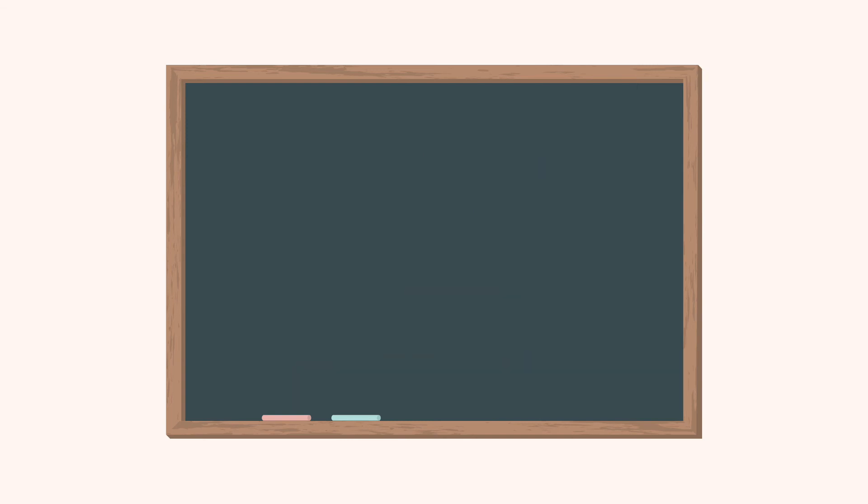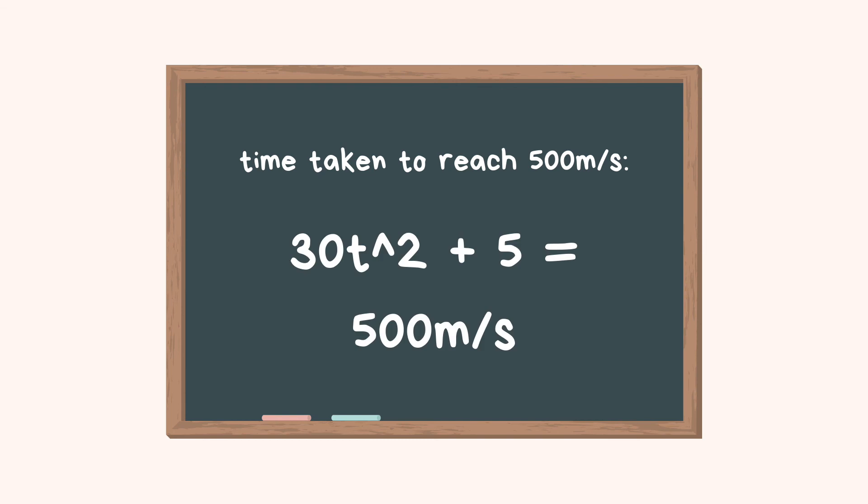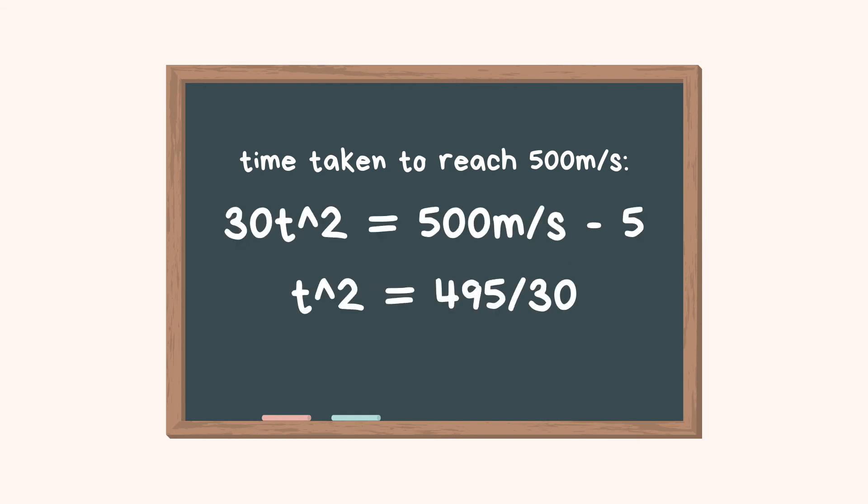For the last question, it still talks about velocity, but instead of asking us to find the value of the velocity, it asks us for the time. We know that velocity is given by this equation, so to find time taken to reach 500 meters per second, we just make this equation equal to 500 meters per second. Move things around and we should get 4.06 seconds.